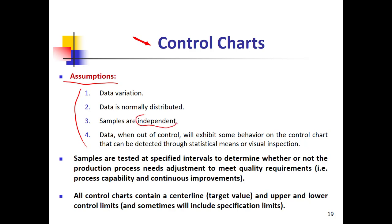We also assume that the samples are independent — I will talk more about independent versus dependent samples at the end of this video. Another assumption is that when the process is out of control, the control chart shows behavior that lets us detect it. Samples are tested at specific intervals — which can be minutes, hours, seconds, or milliseconds — and then we plot them.